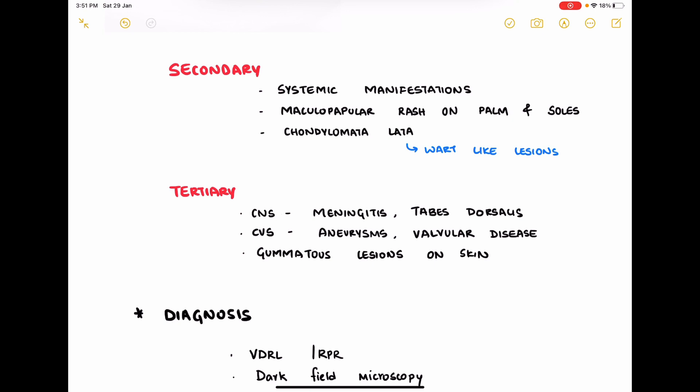Secondary syphilis includes headache, loss of weight, maculopapular rash on the palms and soles. Condylomata lata is a characteristic feature seen in secondary syphilis, which are wart-like lesions.